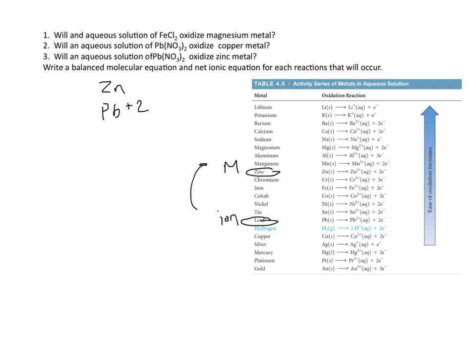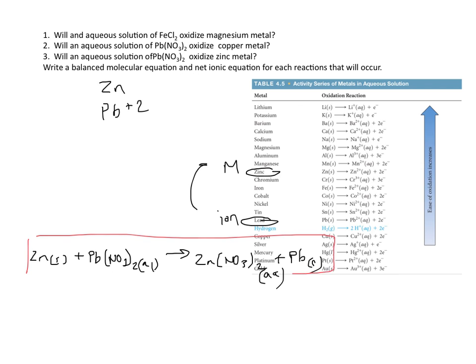So we know that we can write a balanced molecular equation and a net ionic equation. So let's go ahead and let's work on that. So zinc solid plus lead nitrate is going to give you zinc nitrate plus lead. Everything looks to be balanced. The right number of nitrates, right number of lead and zinc atoms. So this is your molecular equation.